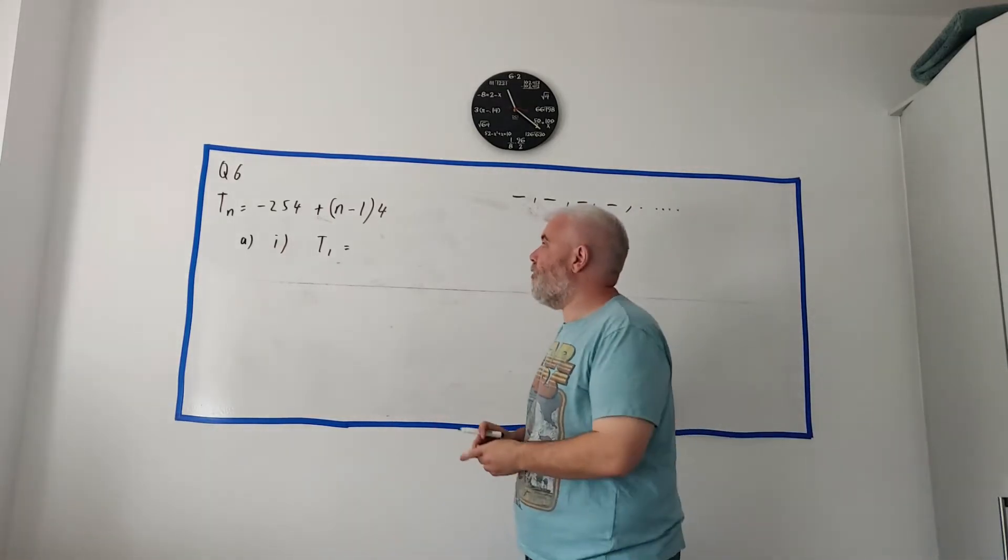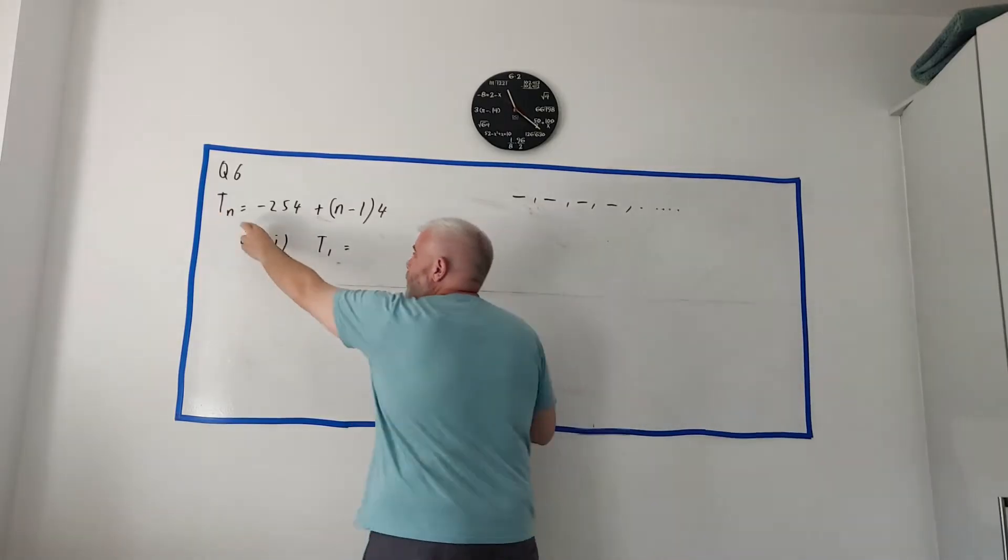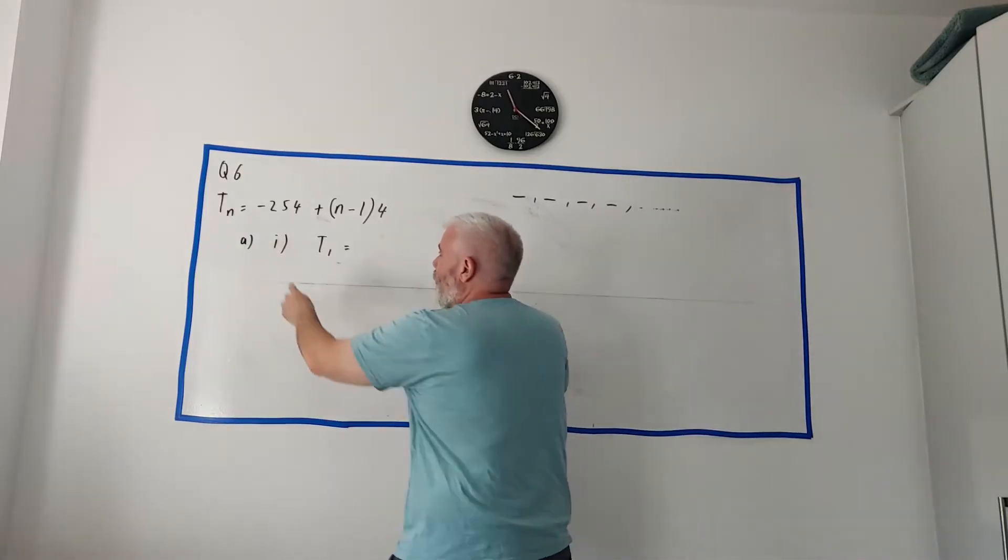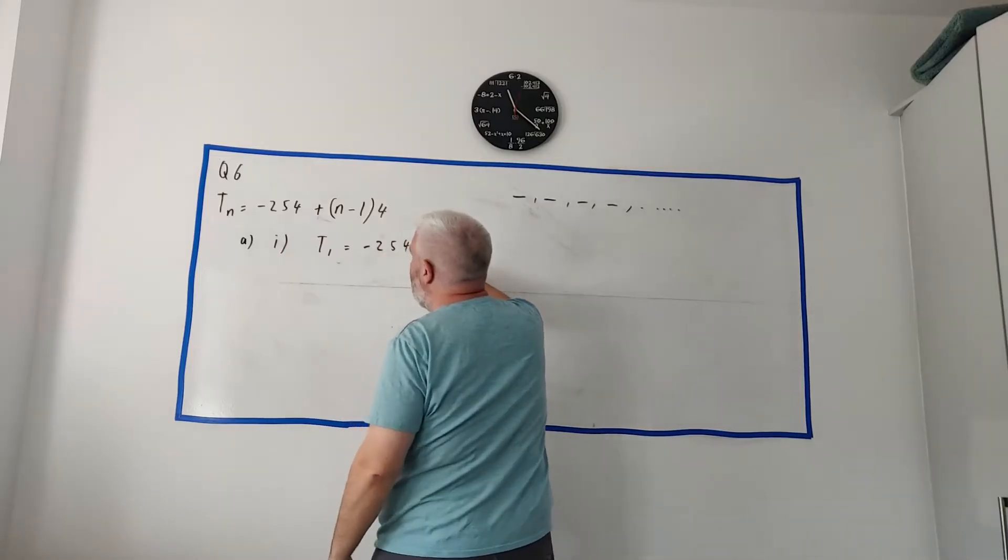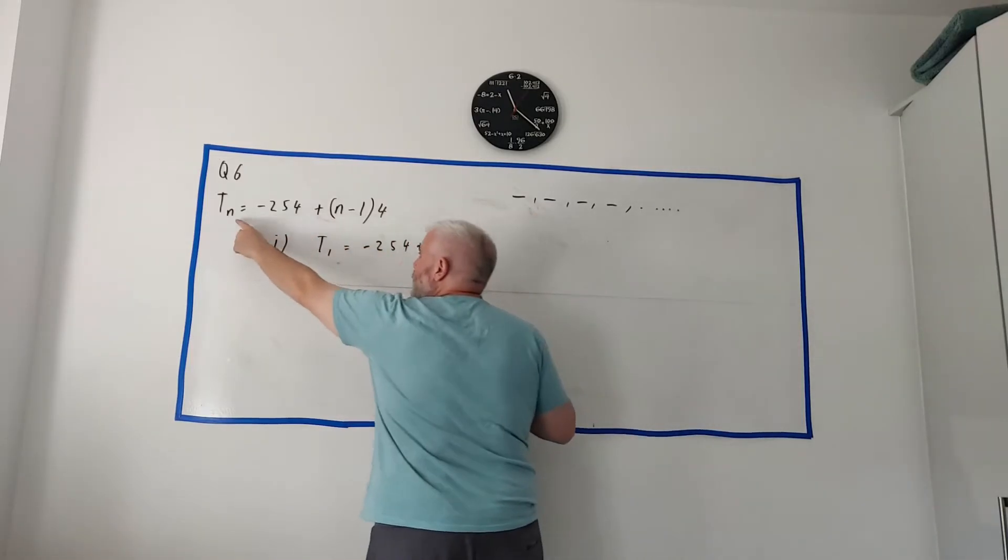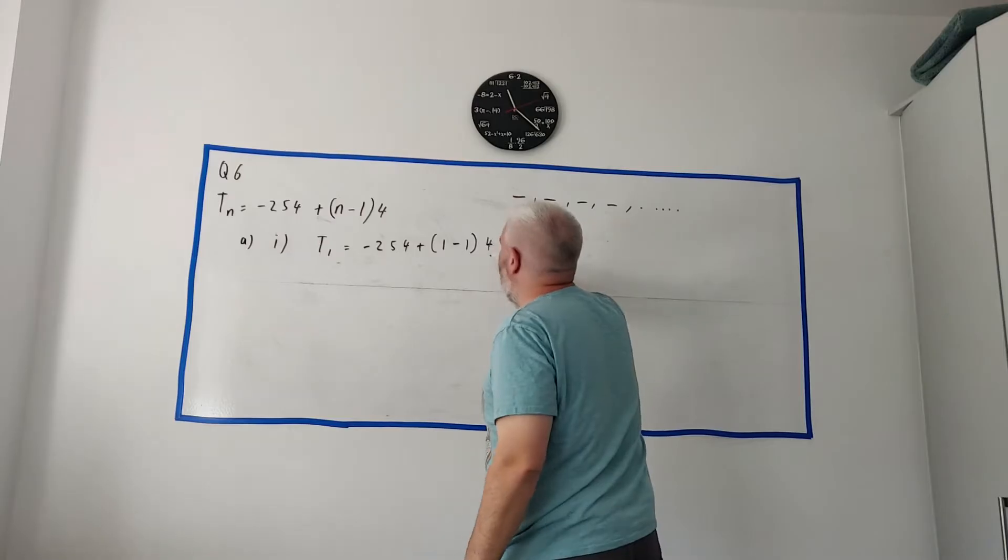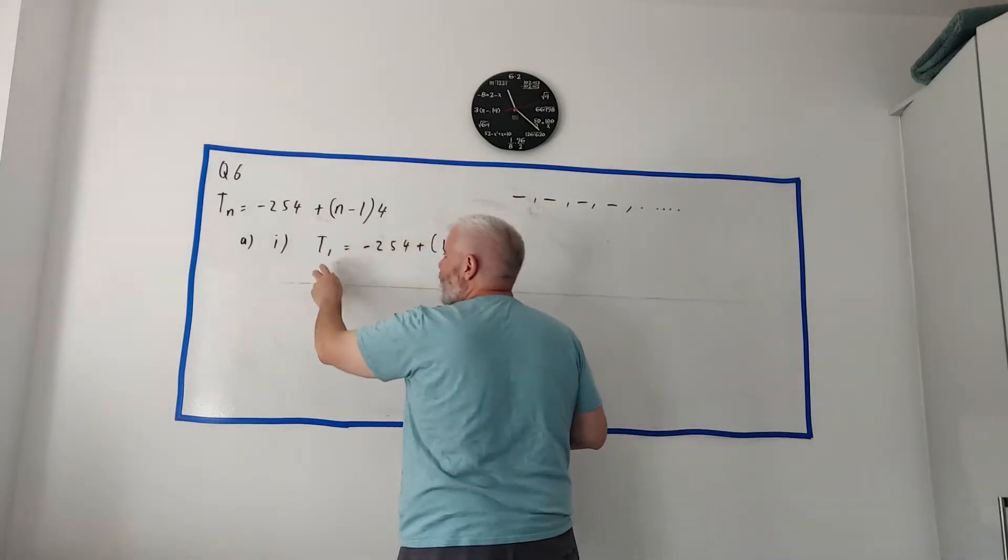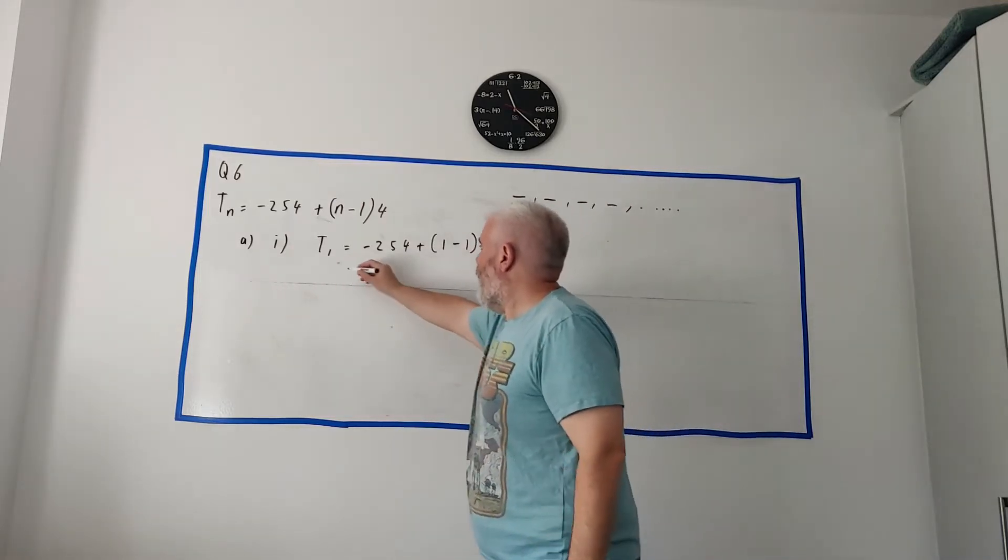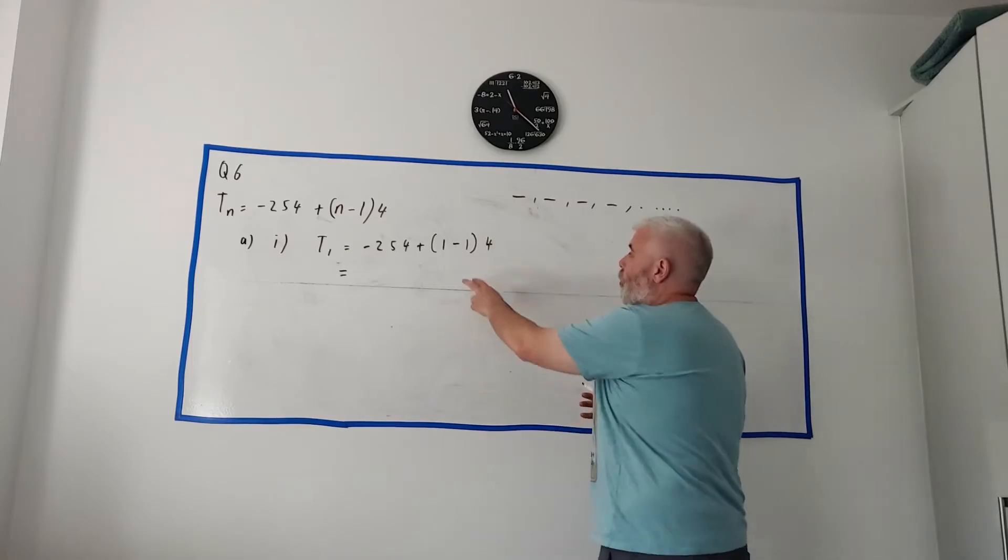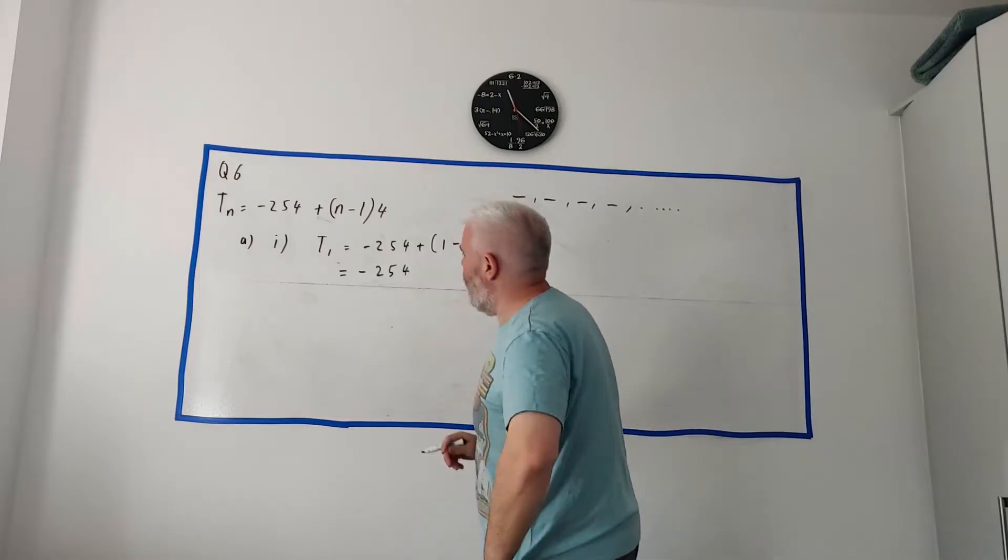They're asking you for the first term and it's very easy to find with this sort of thing. T1, they're telling you every T. T1 is equal to, I'm just going to write this again, T1 equals minus 254 plus, instead of n, I'm writing 1. Everything else is the same. This is identical to this except everywhere I see an n, I'm putting a 1. We clean this up. 1 minus 1 is 0. 0 multiplied by 4 is 0. So all we're left with is minus 254.